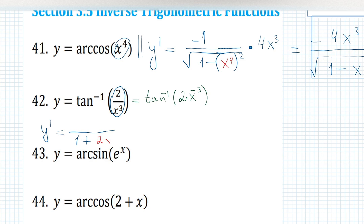Then y prime becomes derivative of arctangent is 1 over 1 plus input squared. But what is my input? 2x⁻³ squared.